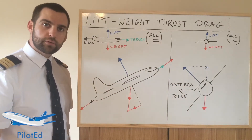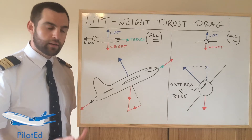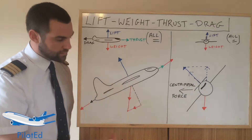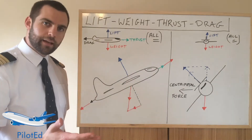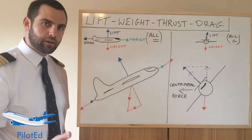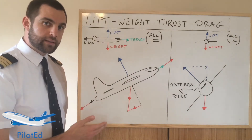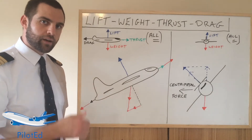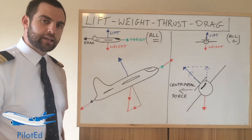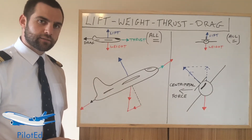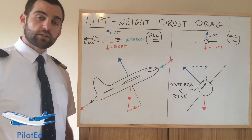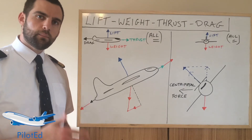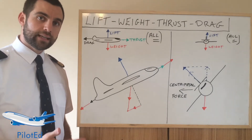So weight is greater than lift in a climb — a little counterintuitive when you say it, but I hope that drawing has explained it to you. Let me know in the comments below what weight and lift are like in a steady descent. Now, turning — the other question which is misunderstood: why do we need more lift in a turn?